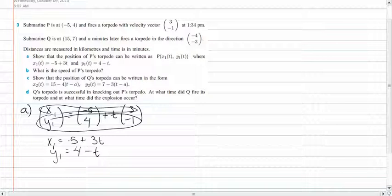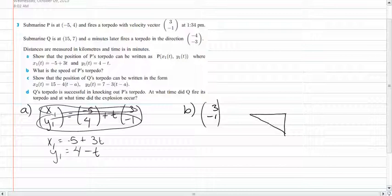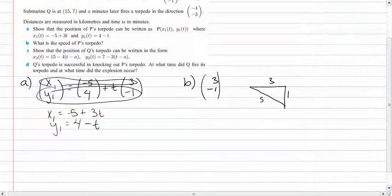For B, it's asking for the speed of P's torpedo. We are given the velocity vector of P, which is 3, negative 1. We know that a vector has direction and magnitude, so to find the speed we have to find the components. It's 3 across and 1 down, so we can make a triangle to find the speed, which would be this vector. This is 3 and 1, and you basically just have to use the Pythagorean theorem. You do 3 squared plus 1 squared equals S squared. So 9 plus 1 equals S squared. S squared equals 10. So the speed is square root of 10 kilometers per minute.